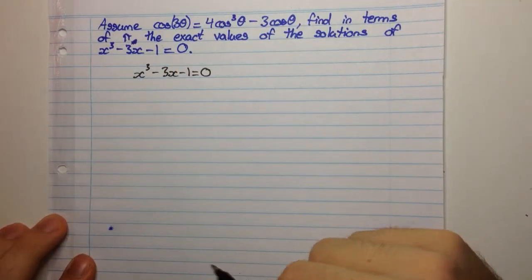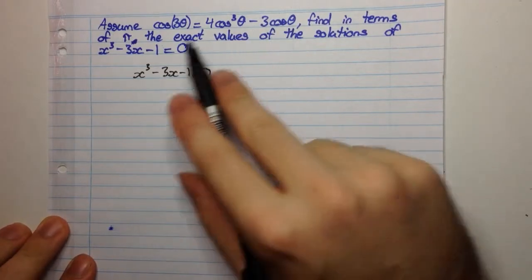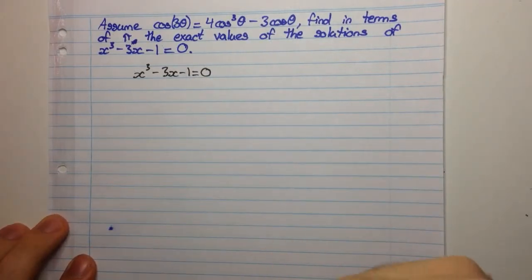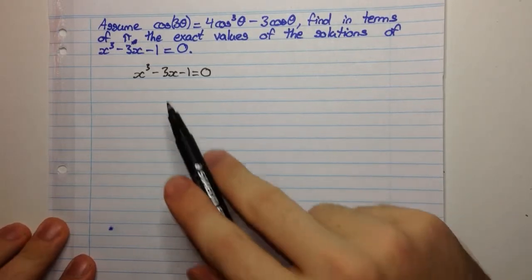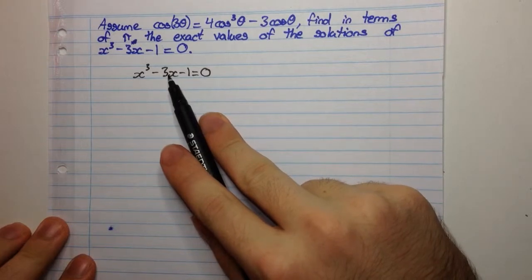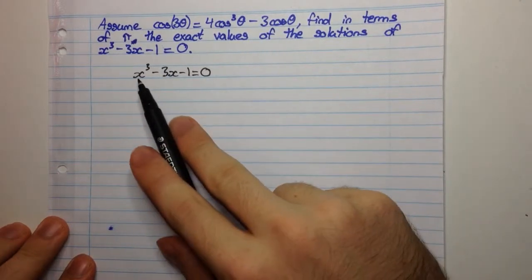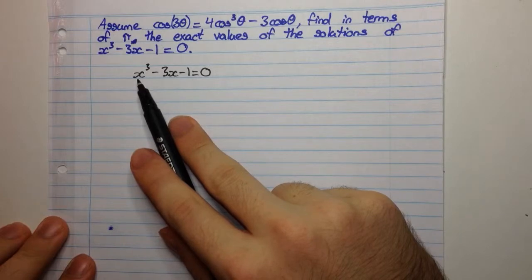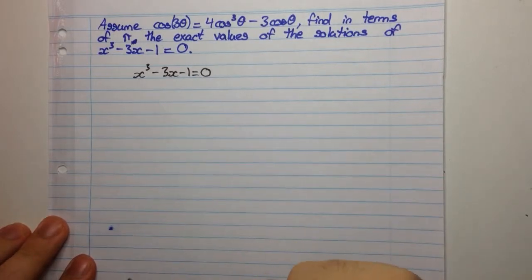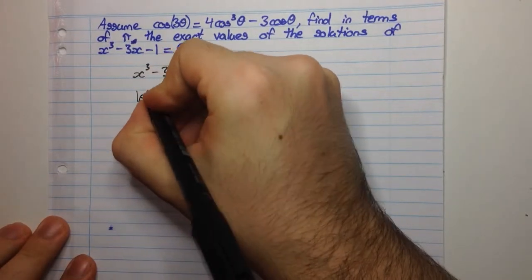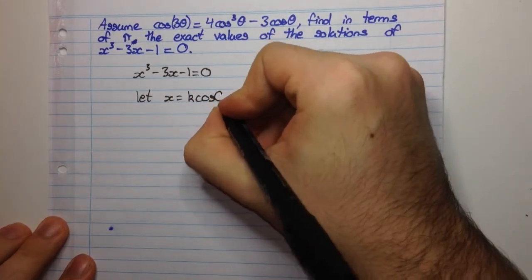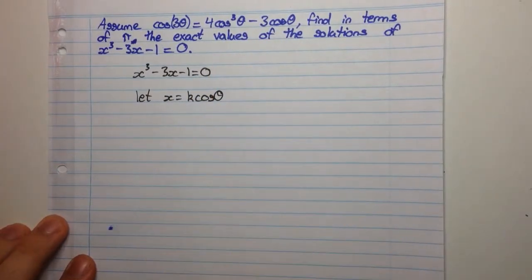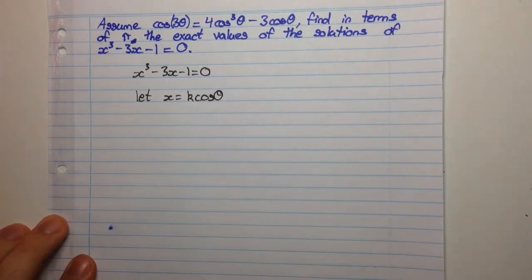Now the first thing that we're going to do is since there's this relationship that we've identified, we're going to probably think to let x equal cosθ. But when we do this, you'll see that we have 3cosθ as we have here, but here we're going to have just cos³θ and not 4cos³θ. So we're off by some constant out the front. So we can say let x equal kcosθ and then we'll try to determine this value of k.